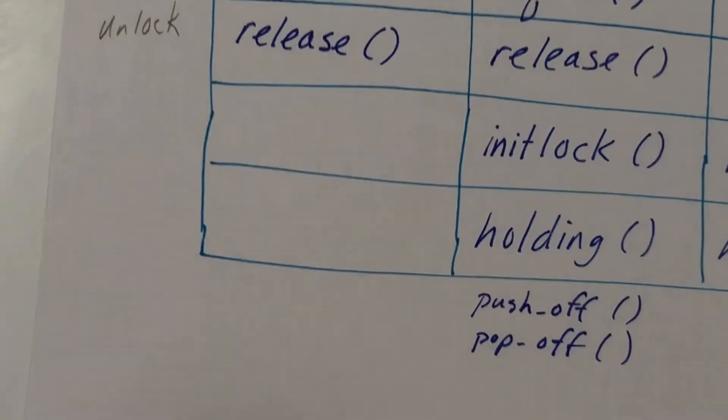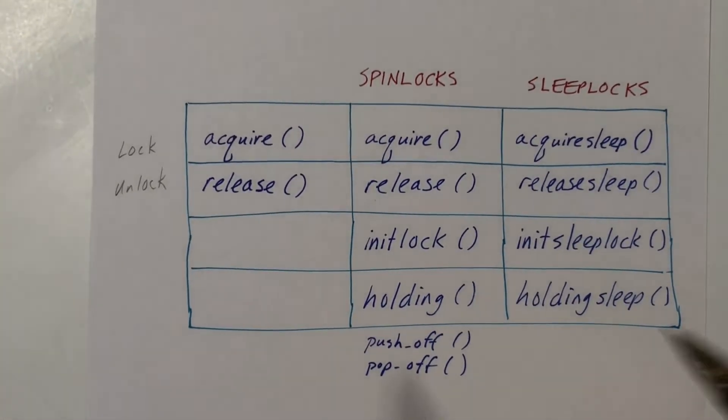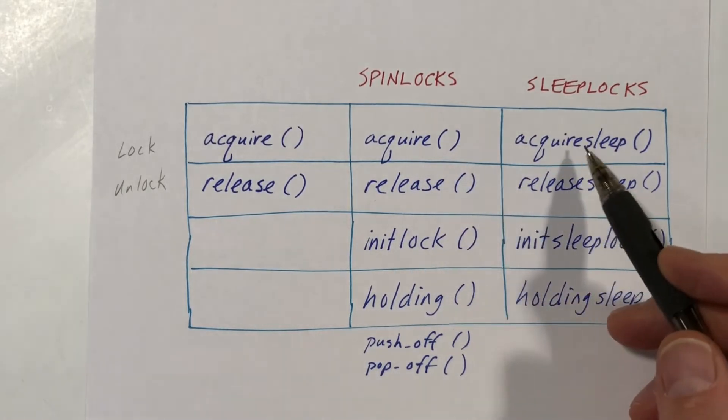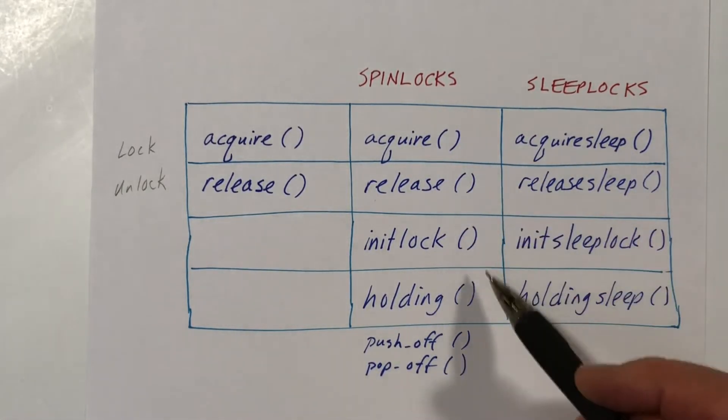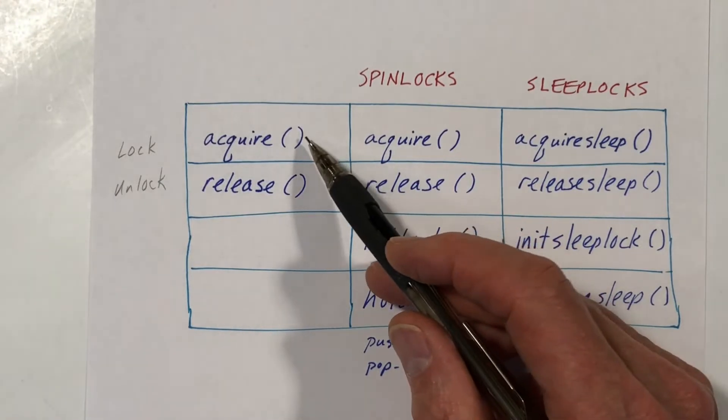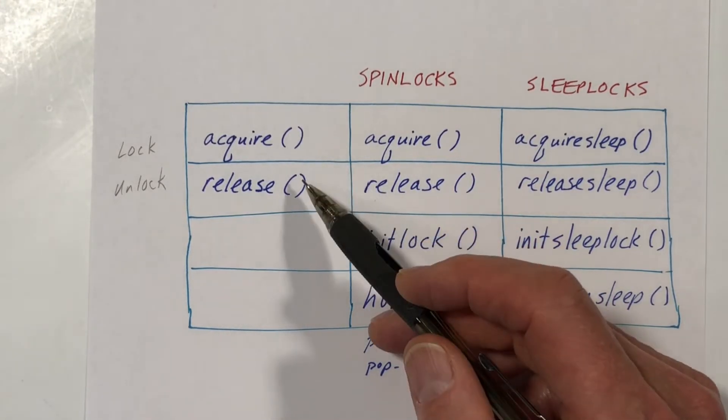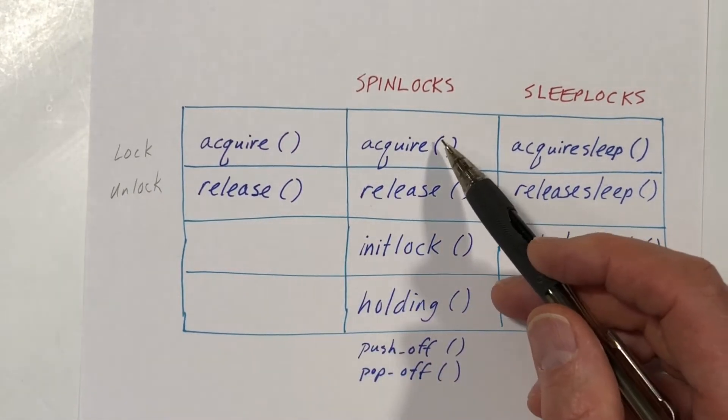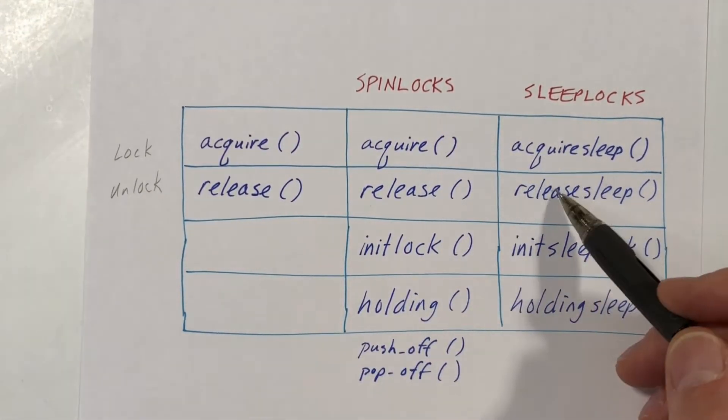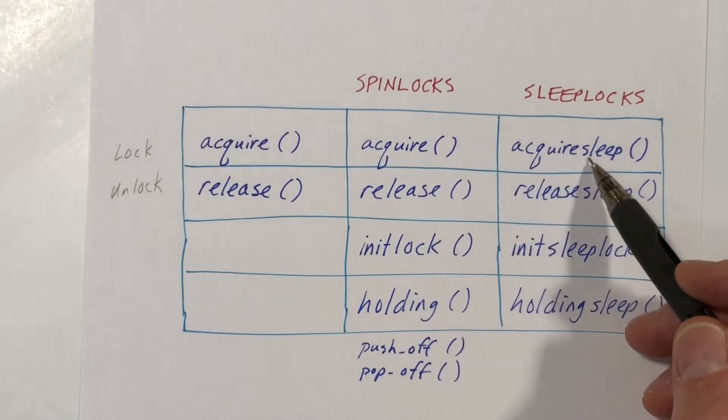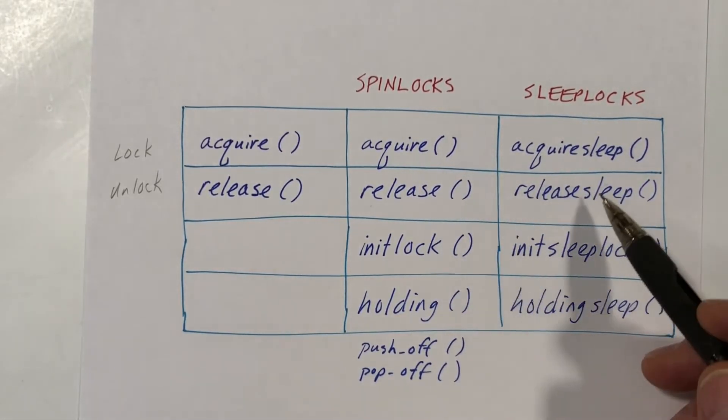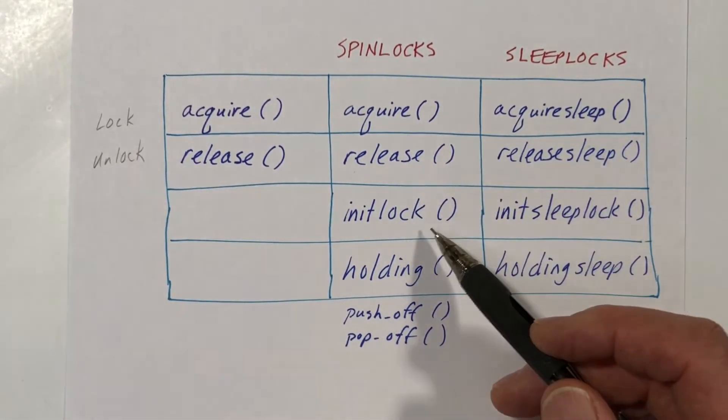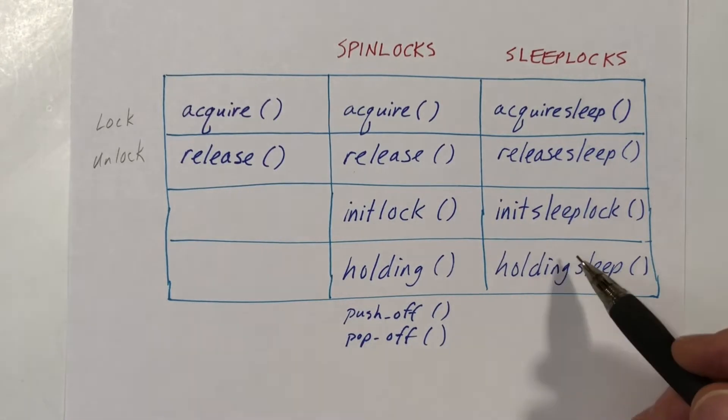Well, let me cut to the chase and address the question of the differences between spin locks and sleep locks by looking at the functionality, and we can see that it is essentially exactly the same. With any lock, we need an acquire function and a release function. Sometimes these are called lock and unlock, and we have those with both spin locks and sleep locks. Acquire versus acquire sleep, release versus release sleep, and we also have some functions to initialize the locks and to check to see whether we're holding the locks.